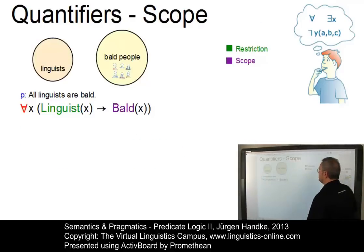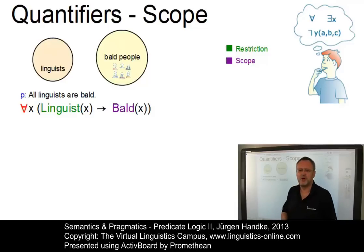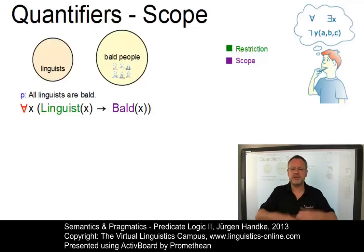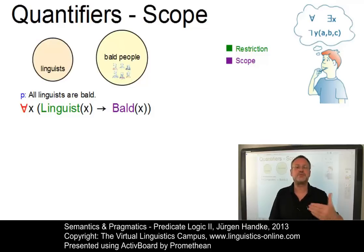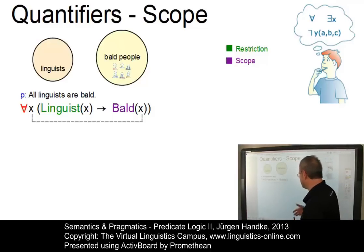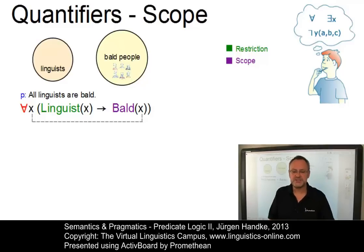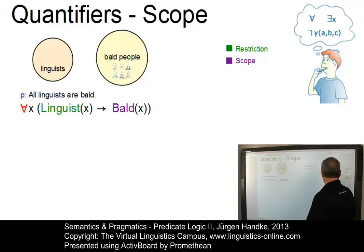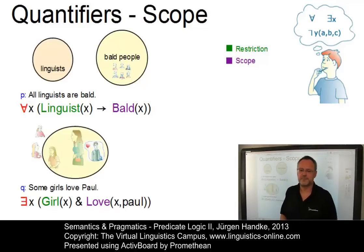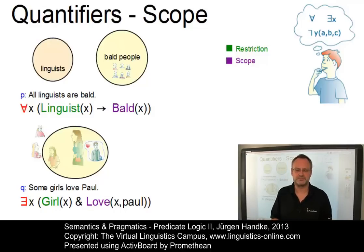The second remark concerns the scope of quantifiers. The scope of a quantifier is the set of entities denoted by the main predication of the proposition in which the quantifier appears — it expresses what is true of the entities referred to by the quantified noun phrase. In 'All linguists are bald,' bald(X) is the scope and linguist(X) the restriction. In 'Some girls love Paul,' love(X, Paul) is the scope and girl(X) the restriction.